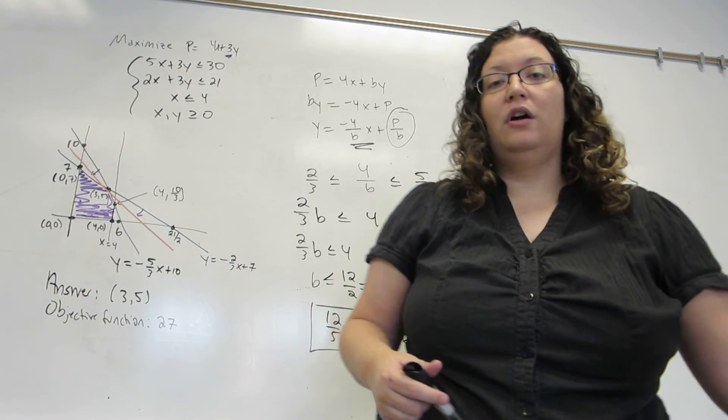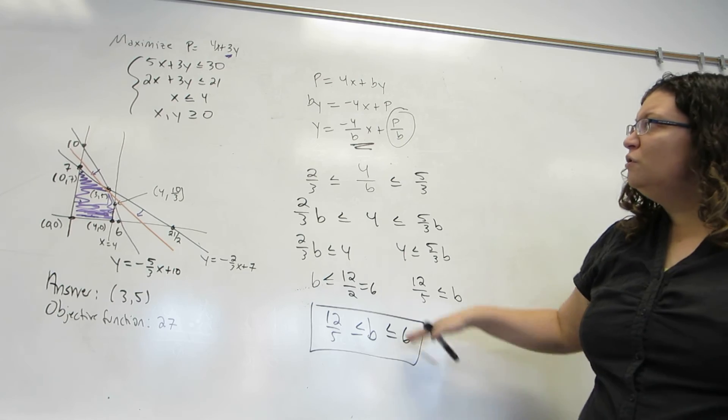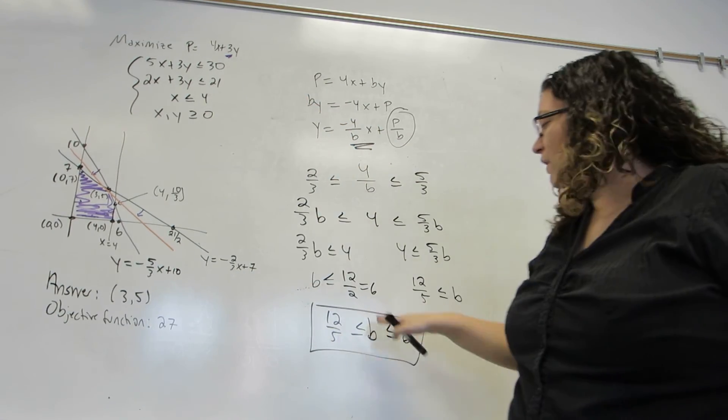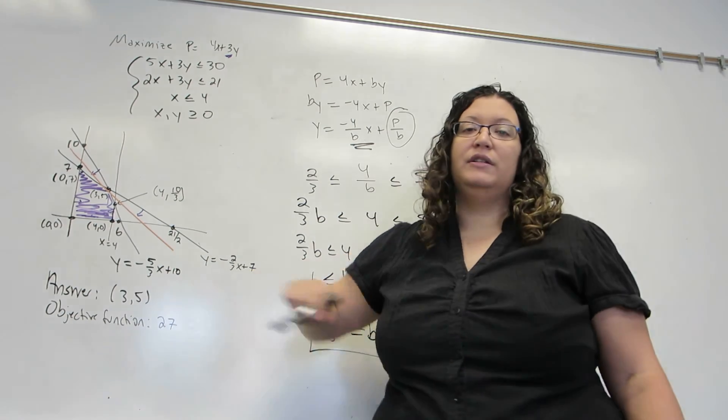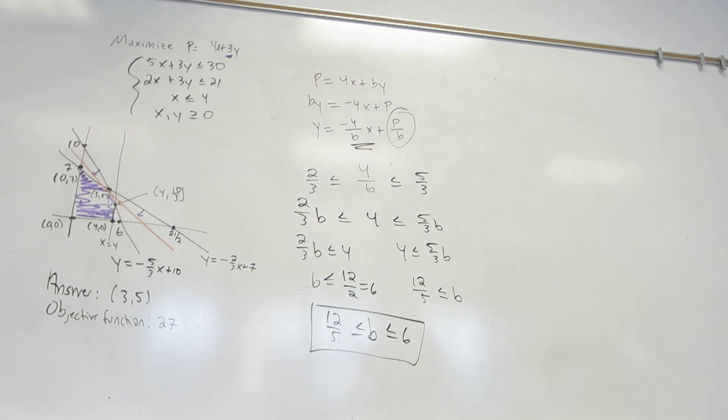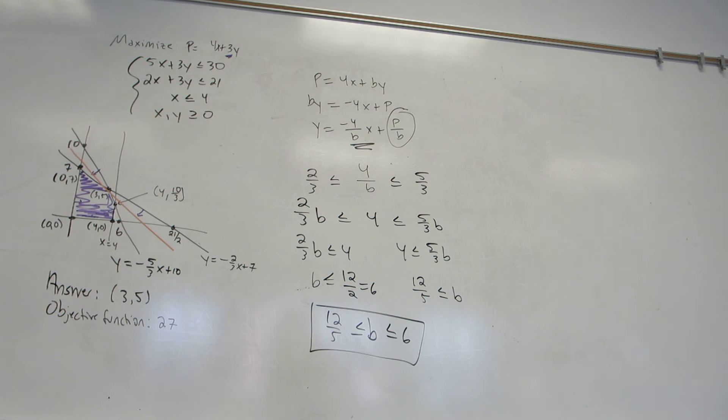Just as when we were solving for a, as long as you change that 3 to a number within this range, you are not going to change the fact that the answer is at the point 3, 5. So it's calculating how much wiggle room you have.